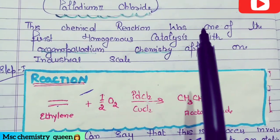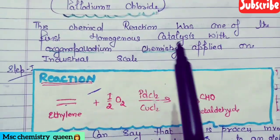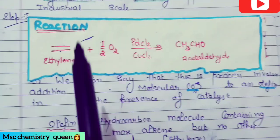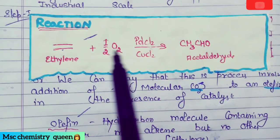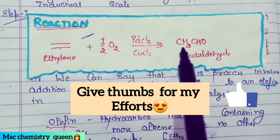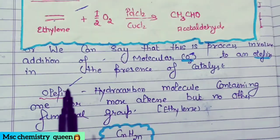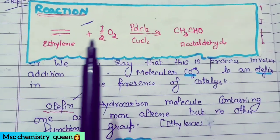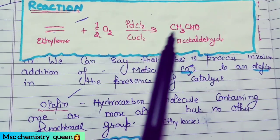This chemical reaction was one of the first homogeneous catalysis reactions with organopalladium chemistry applied on an industrial scale. In the reaction, ethylene is added to oxygen in the presence of a catalyst and co-catalyst. This process involves addition of molecular oxygen to an olefin in the presence of catalyst.